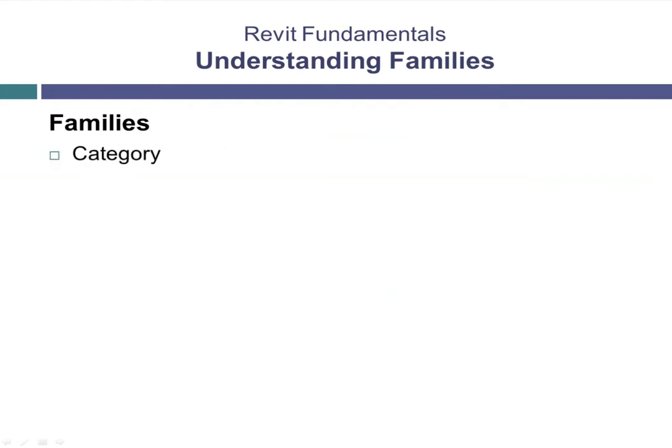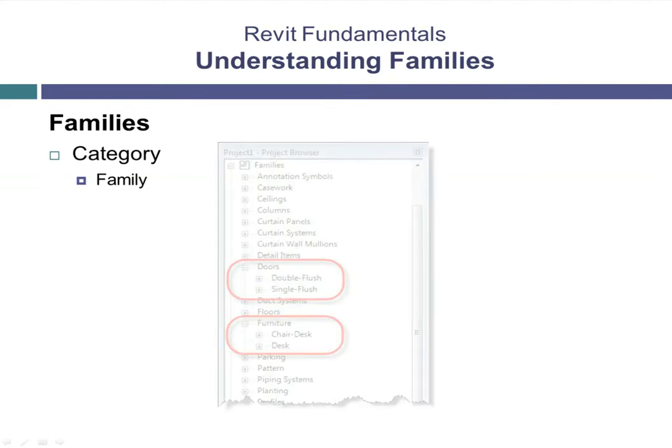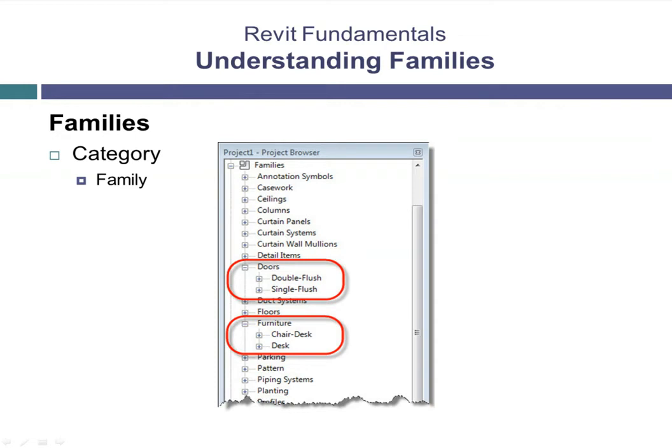For example, if you expand the Doors category, you can see several door families, such as double flush and single flush. Each represents a specific kind of door with unique characteristics. If you expand the Furniture category, you can see several kinds of furniture, such as desks and chairs. Each is a unique family.